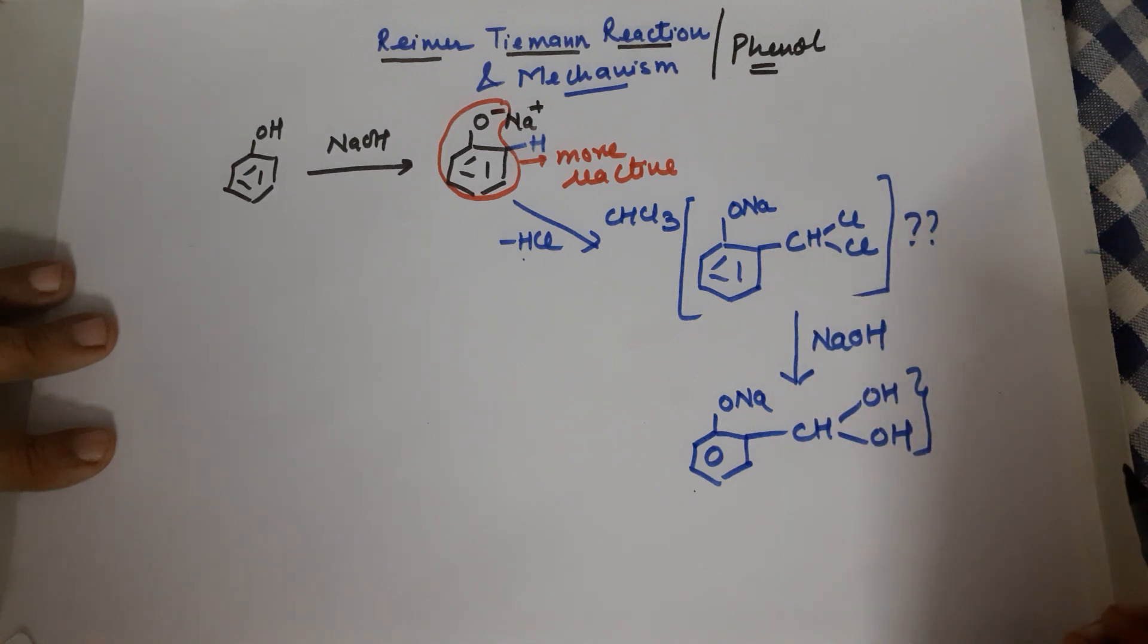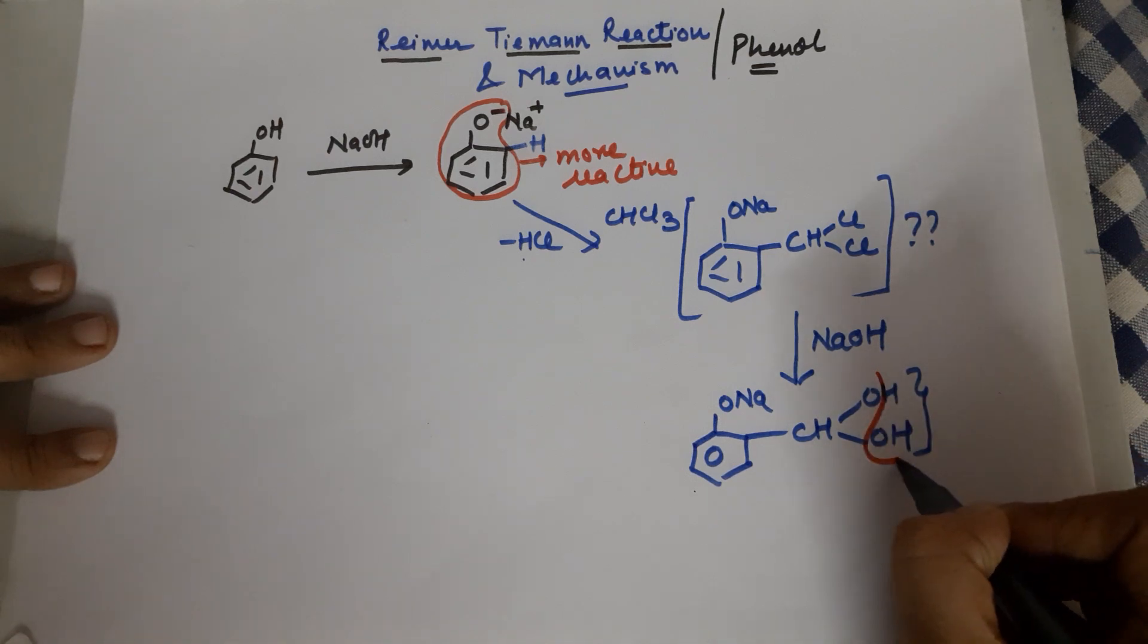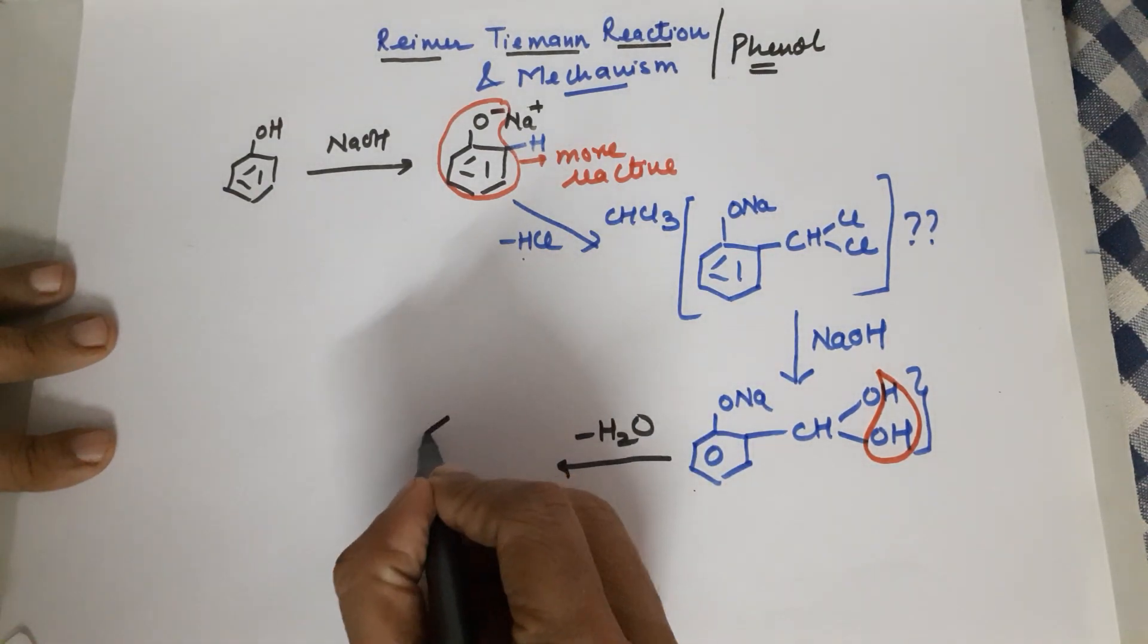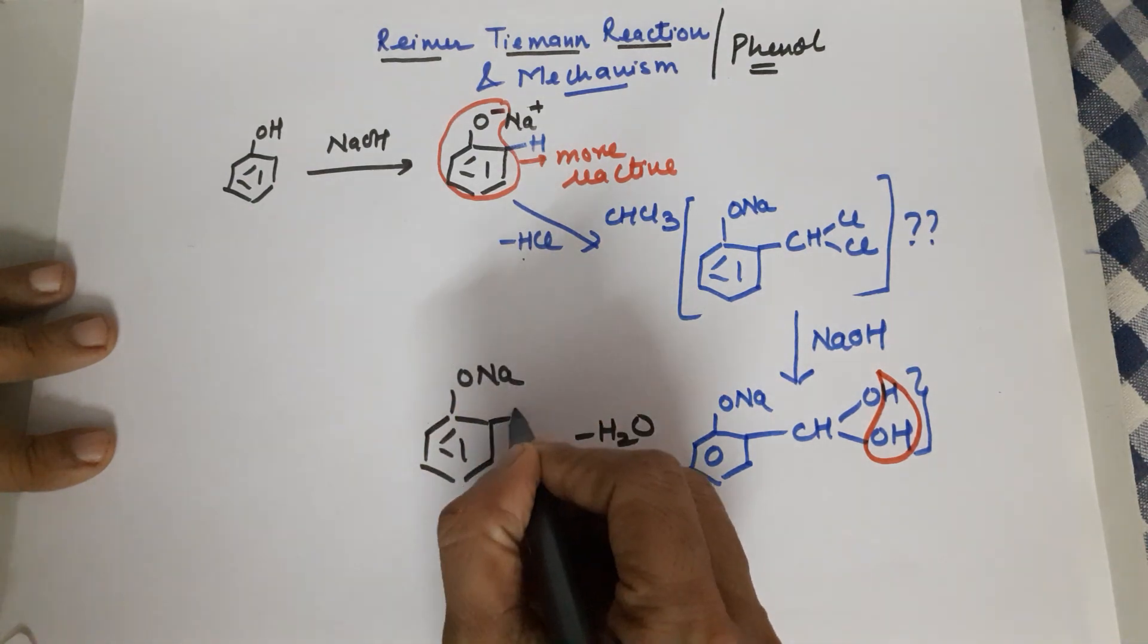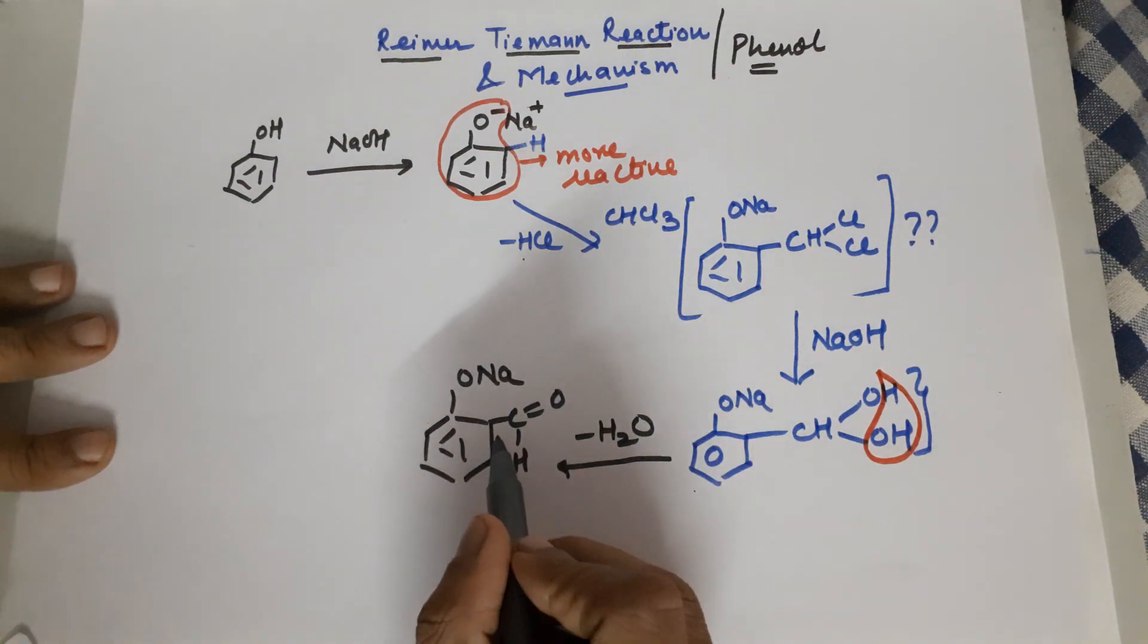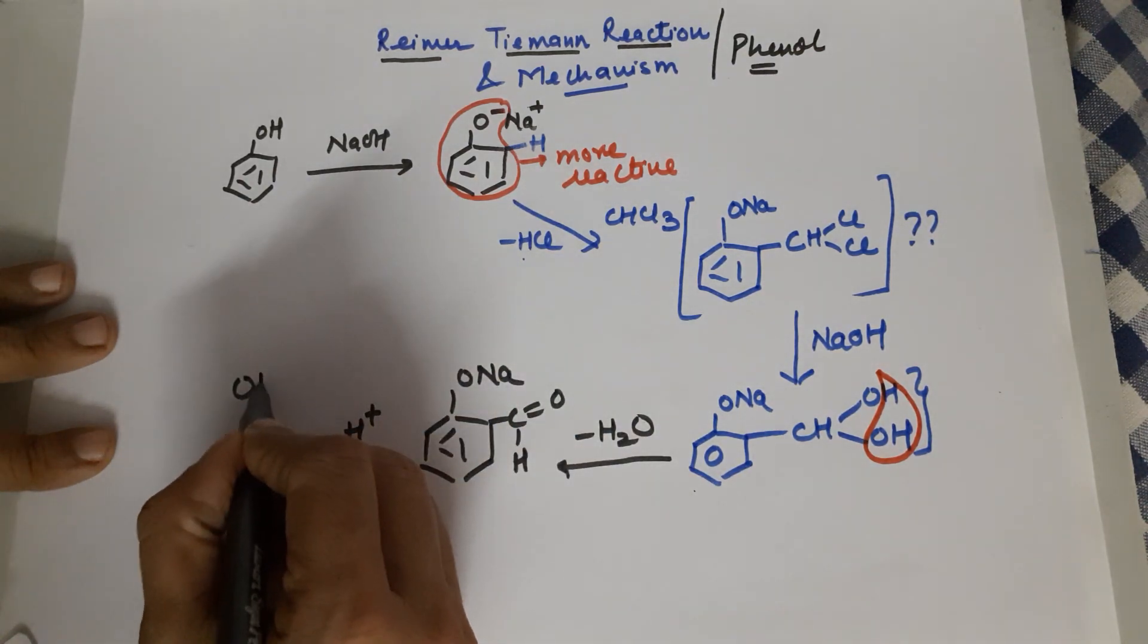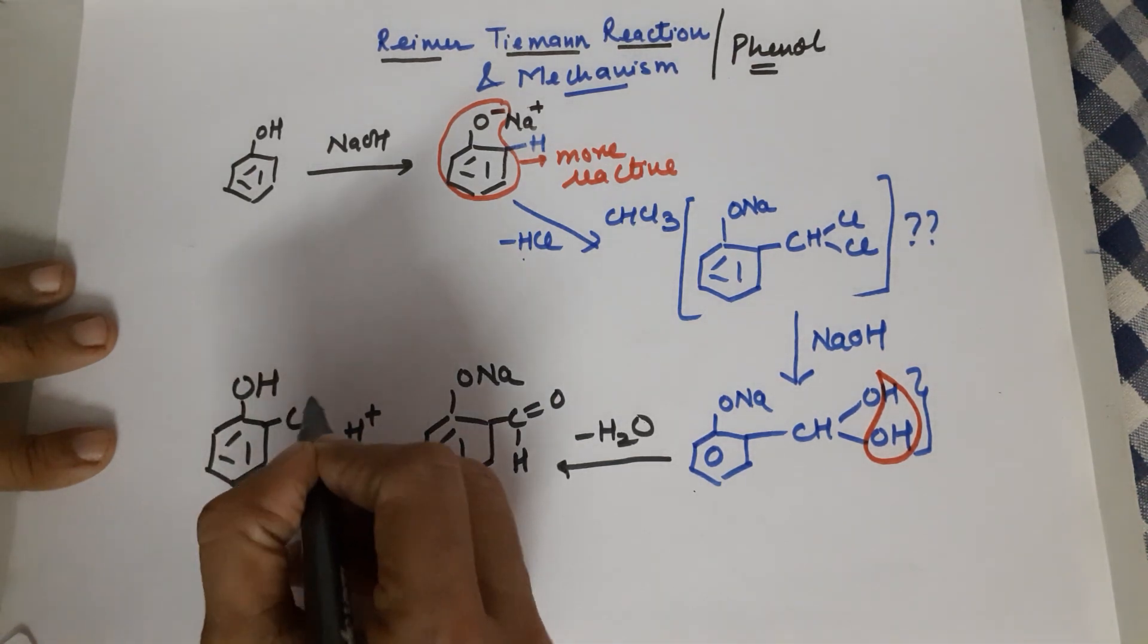Now, this is a geminal diol. Geminal diols are unstable and they easily lose a water molecule. So if this easily loses a water molecule, what do you end up with? You end up with the formation of C double bond O and an H. You get an aldehyde at the ortho position. Now finally, you would add an acid so that this ONa changes back to OH and this is your product in the reaction.